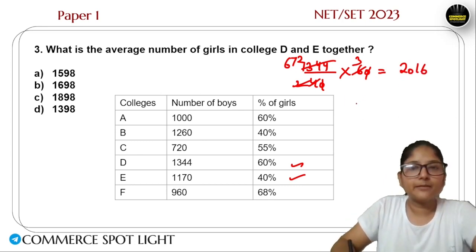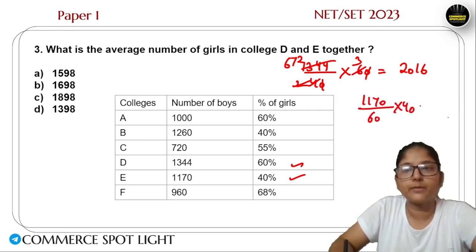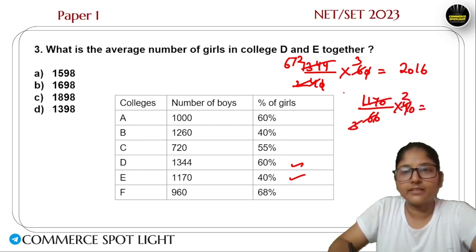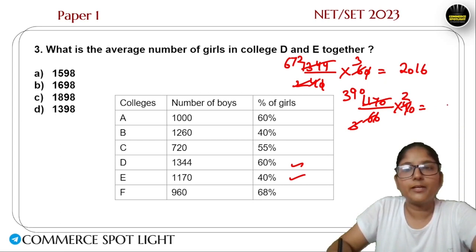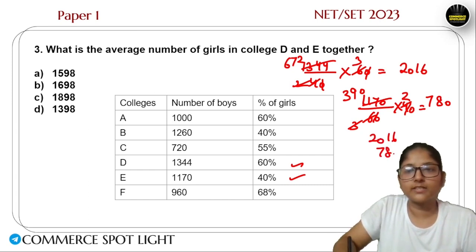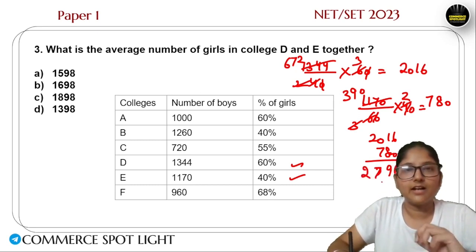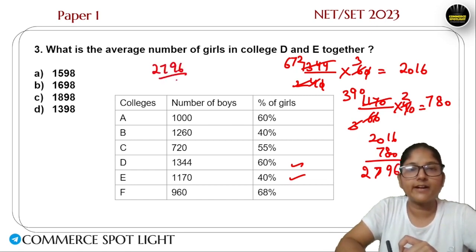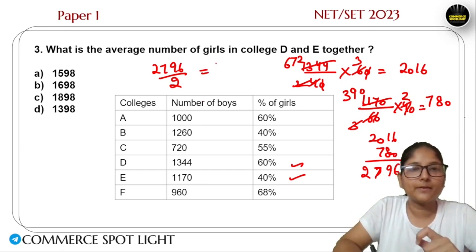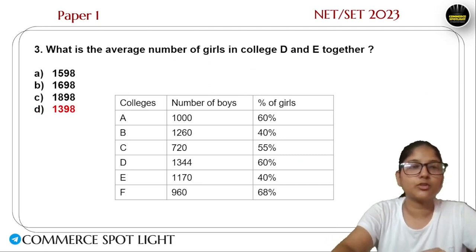We calculate the number of girls by cancelling appropriately. In College E, we get 780 girls, and in College D we get 2016. Now we add 2016 and 780 to get total girls in D and E: that gives 2796. To get the average, divide 2796 by 2 because we have 2 colleges. The answer is 1398. Option D is the correct answer.